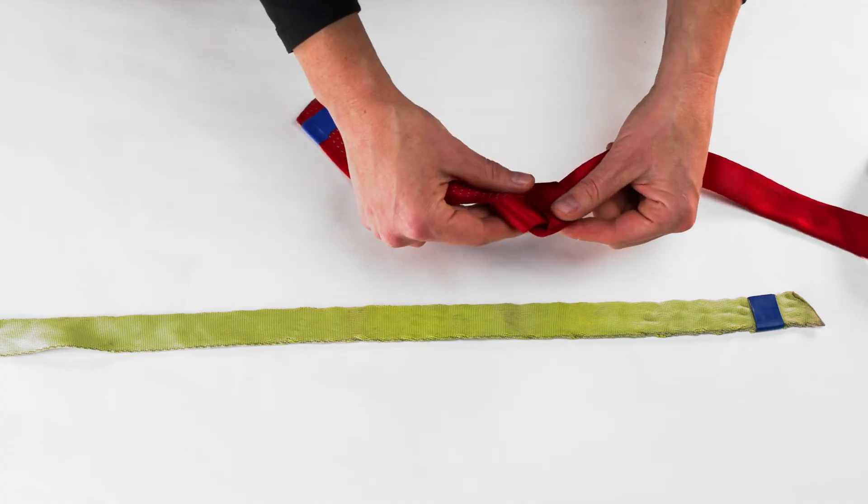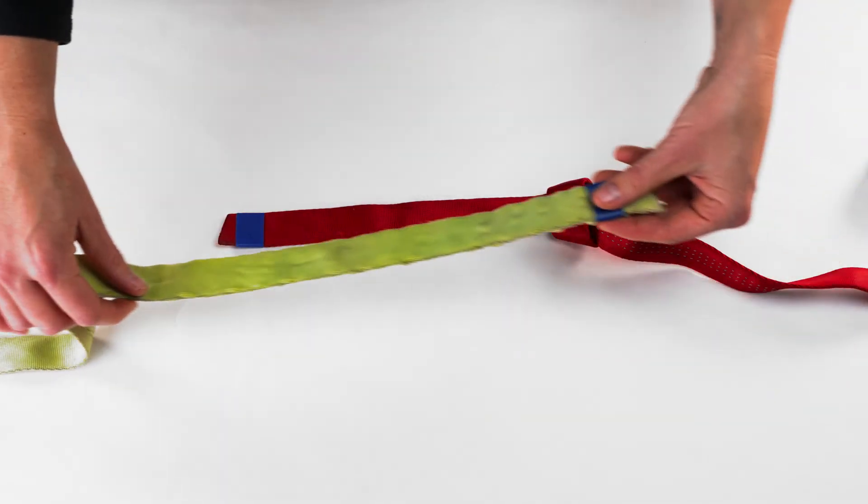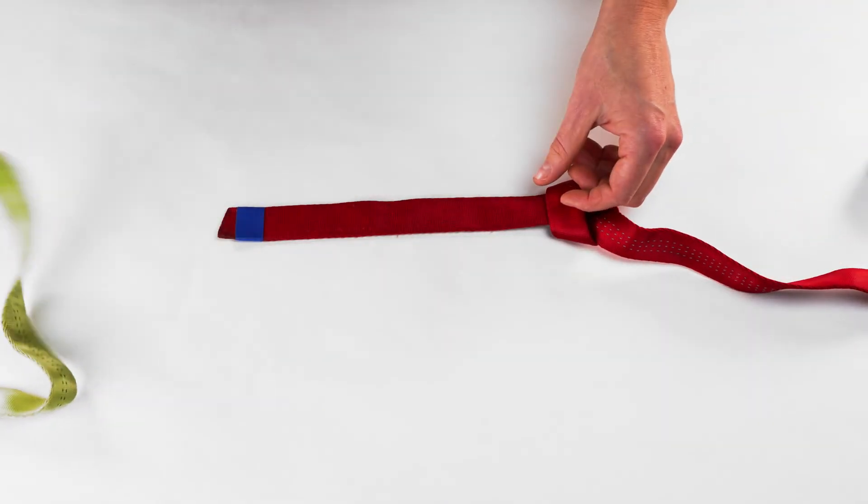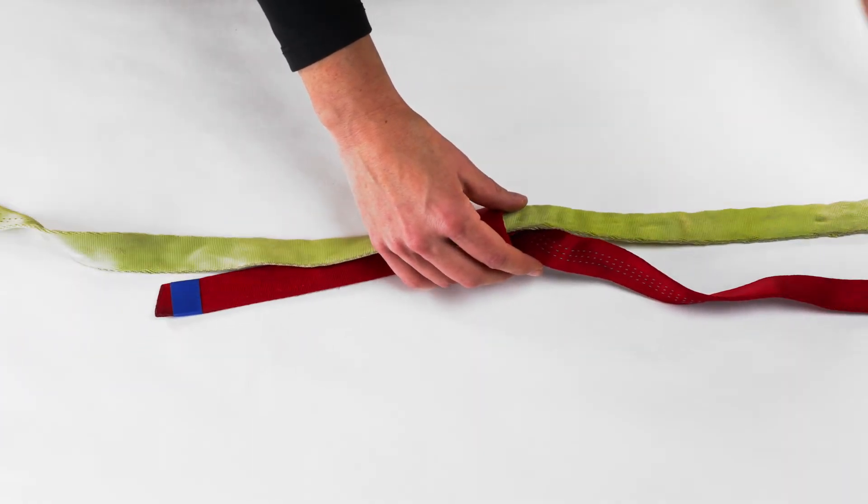Once you have a cleanly dressed knot, start from the working end of the first webbing and feed the end of the second webbing all the way through the overhand knot.